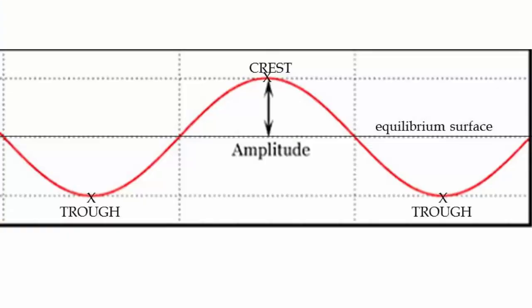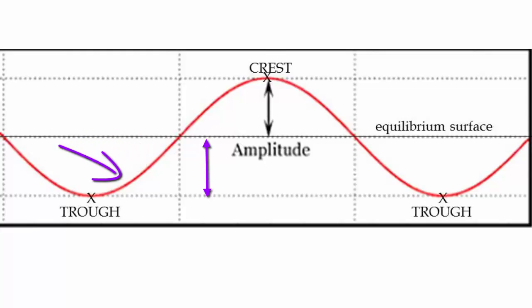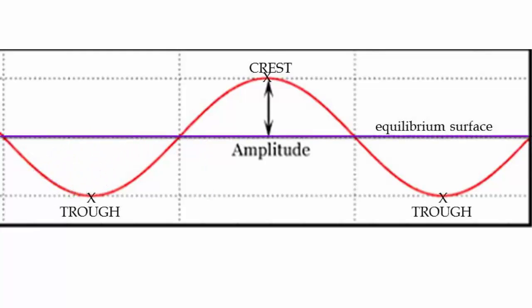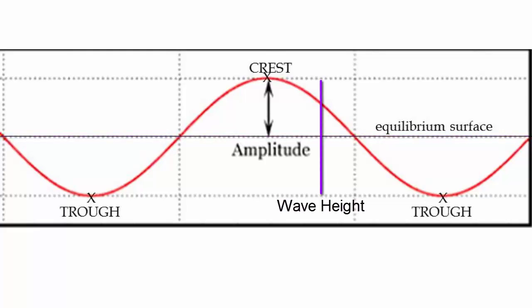Here is a picture of a fictionalized, idealized wave. The amplitude of this wave is the vertical distance from its midline, or equilibrium surface, or still water level, to its highest point, called its crest. That number should be identical to the vertical distance from the equilibrium surface to the lowest point, called the trough. The equilibrium surface is the level the ocean surface would be at if there were no waves at all. The wave is a disturbance above and below this line. The height of the wave is the vertical distance from crest to trough — it is twice the amplitude.